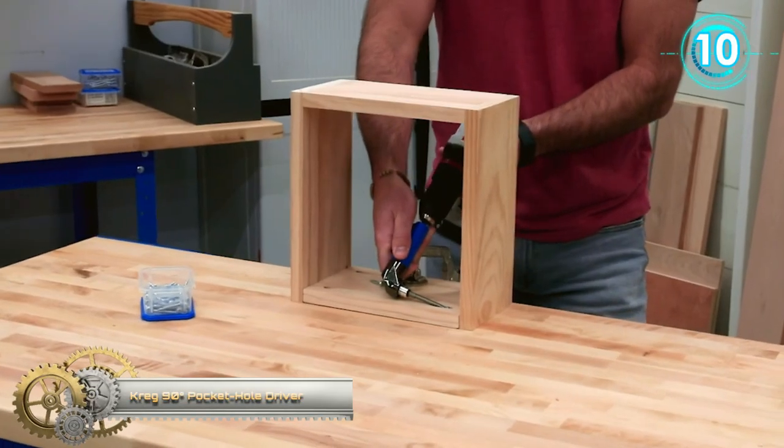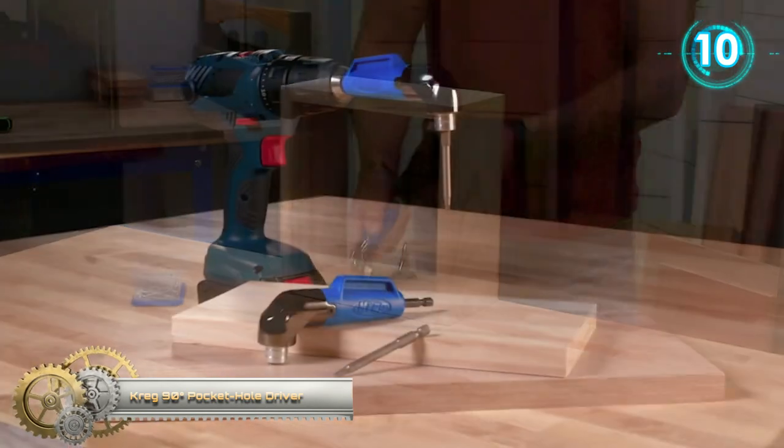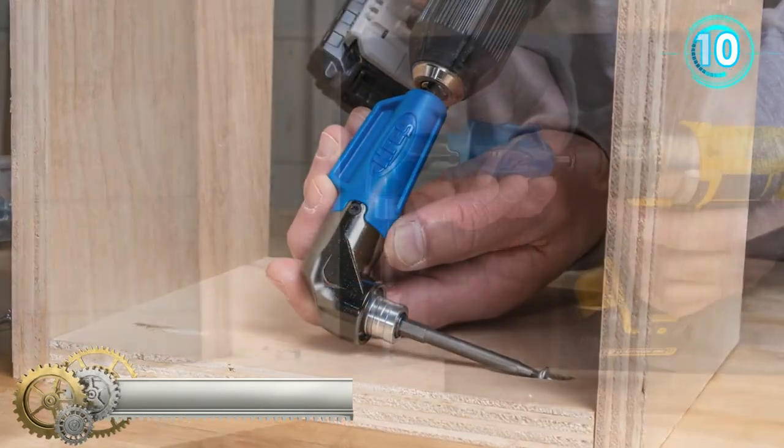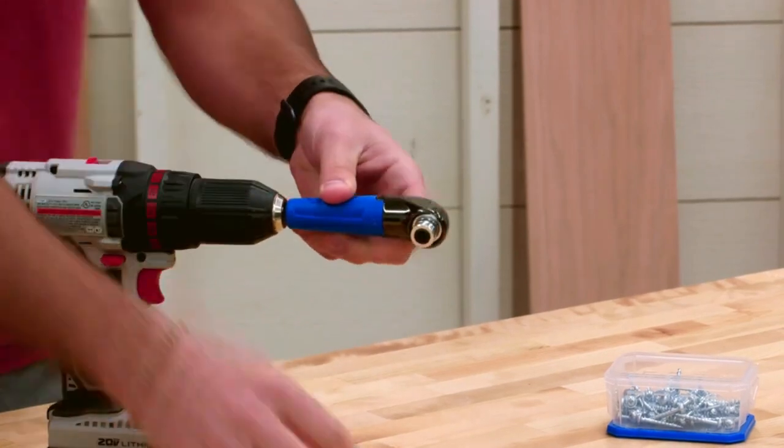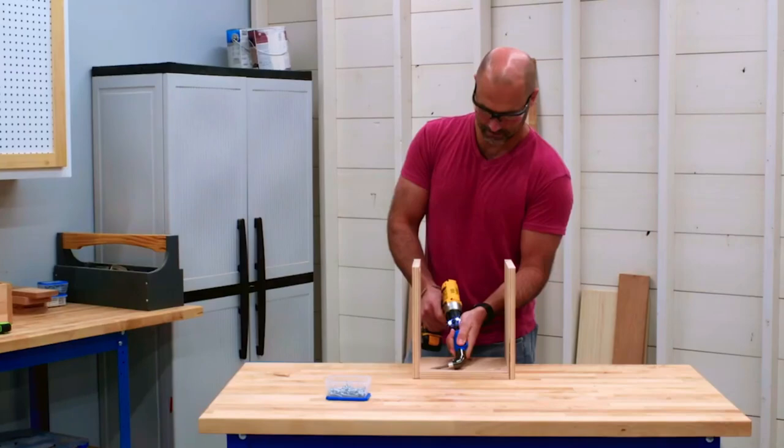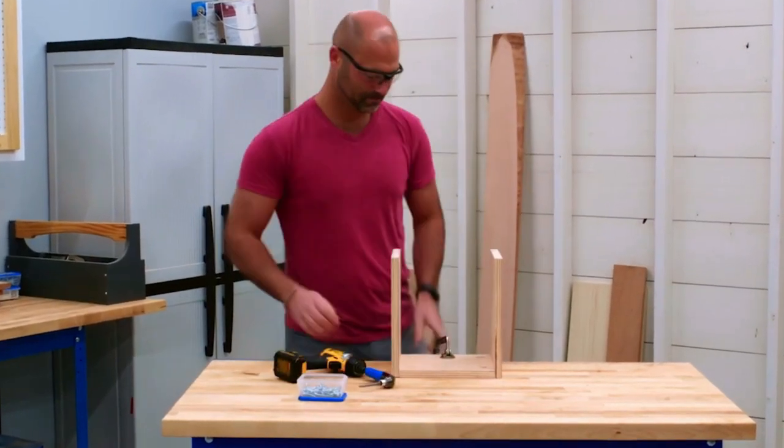The Craig 90 degree pocket hole driver allows you to drive pocket hole screws and any screws into tight spaces. This sturdy, compact drill attachment allows your drill to reach where it might not have been able to before.